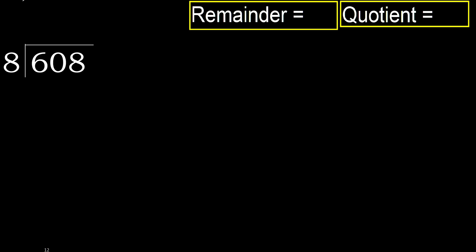608 divided by 8. 6 is less, therefore next. 60 is not less, therefore with 60. 8 multiplied by which number is nearest to 60, but not greater.